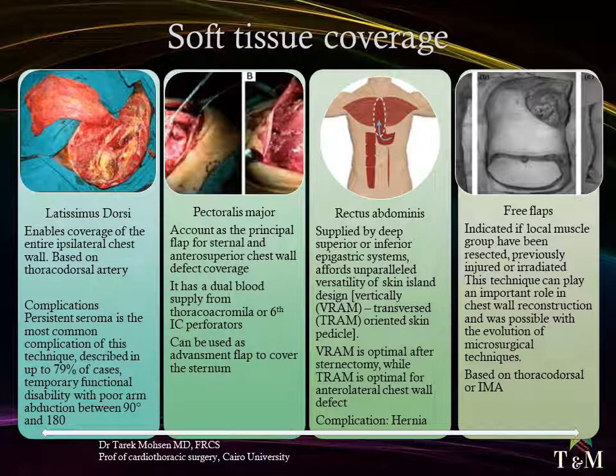The rectus abdominis flap, fed by the deep superior or inferior epigastric systems, affords unparalleled versatility of skin island design — vertically (VRAM) or transversely (TRAM) oriented skin paddle — enabling wide application for coverage of anterior or anterolateral defects. VRAM skin islands have a more robust blood supply than TRAM islands due to an increased number of perforators. VRAM flaps are well suited for covering large longitudinal chest wall defects, such as after total sternectomy, and can cover defects up to 40 cm in size.